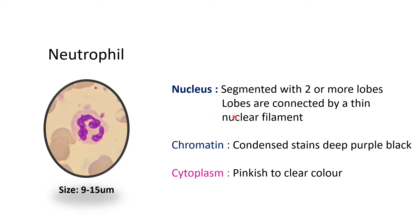The neutrophil is also called the segmented neutrophil. To identify them, we look at the nucleus, which has two to five lobes connected by thin nuclear filaments, as you can see where the laser is pointing. Usually three to four lobes are seen. The chromatin appears condensed and deep purple-black. The cytoplasm is pinkish to clear, with few fine granules of varying sizes, pinkish to tan in color. The size of the neutrophil is 9 to 15 micrometers.